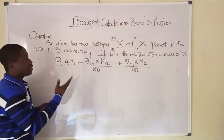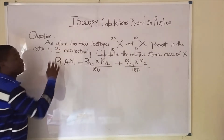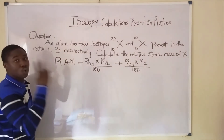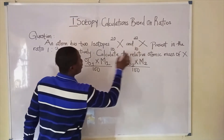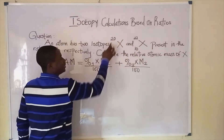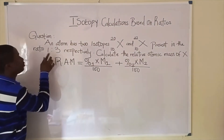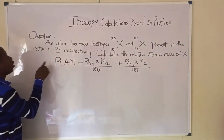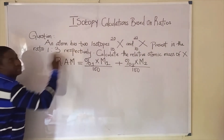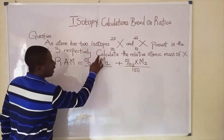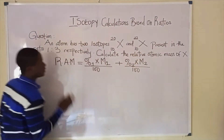You can see the question. The question says an atom has two isotopes: x20 and x22, present in the ratio 1:2 respectively. Calculate the relative atomic mass of x.